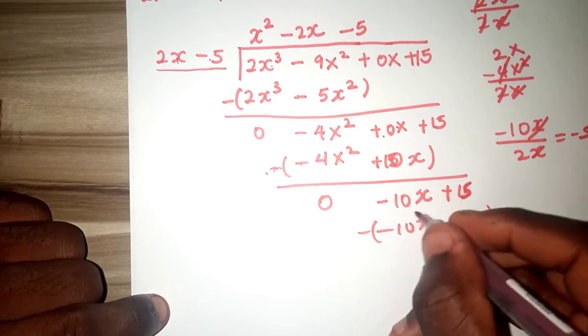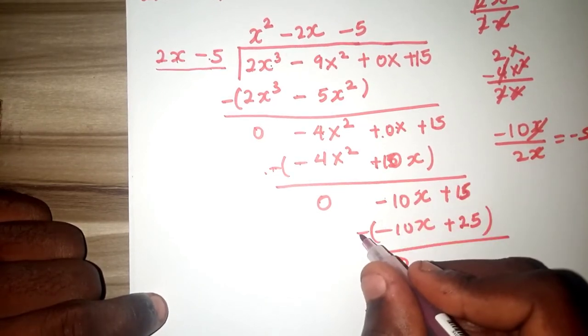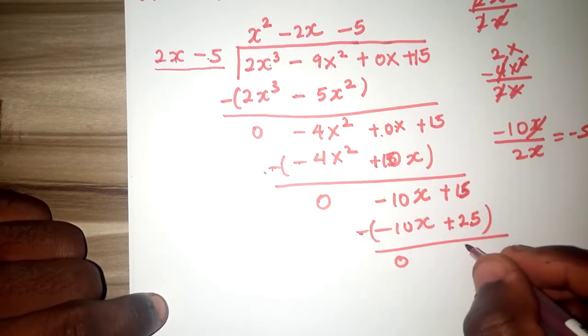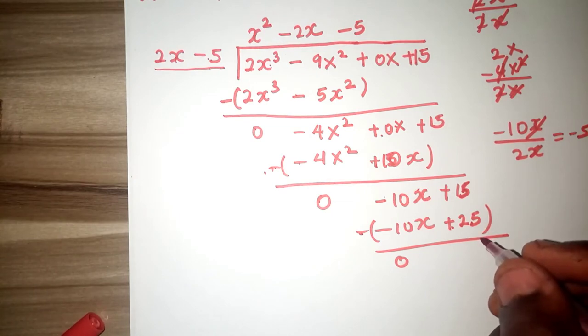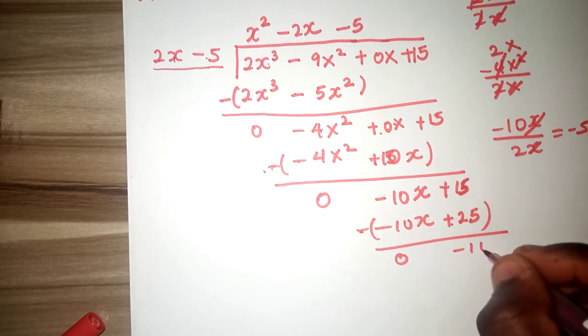With this, when you introduce your minus again, you have 0, 15 minus plus 25, that is 15 minus 25, that will give us minus 10.